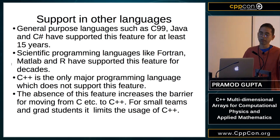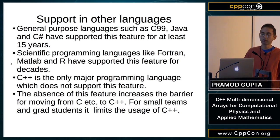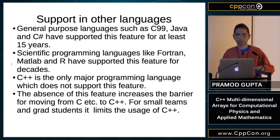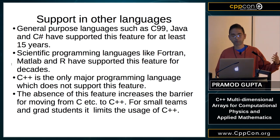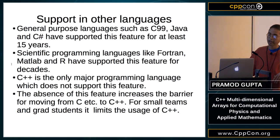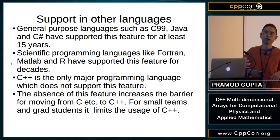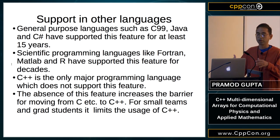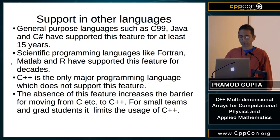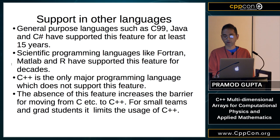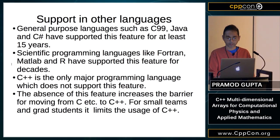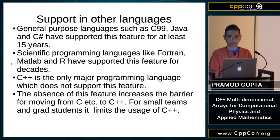Fortran has supported multi-dimensional arrays for about 50 years. There are no real unknown aspects of this feature. Yet C++ is the only major programming language that does not support it. The absence of this feature increases the barrier to moving from C to C++, and for small teams and grad students, it limits their usage of C++ for scientific computing.